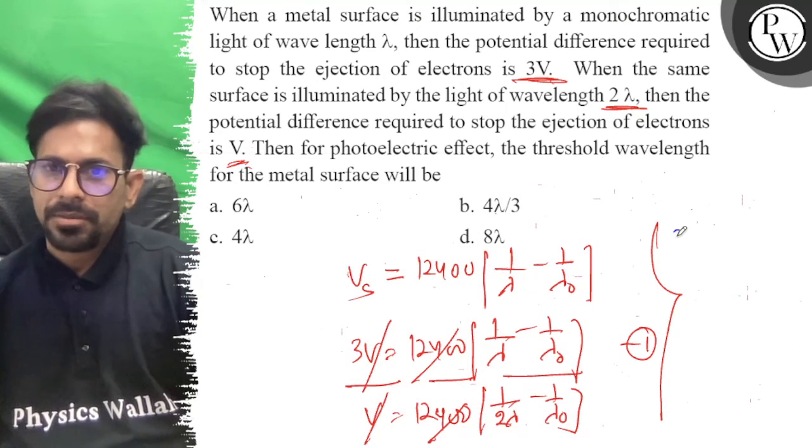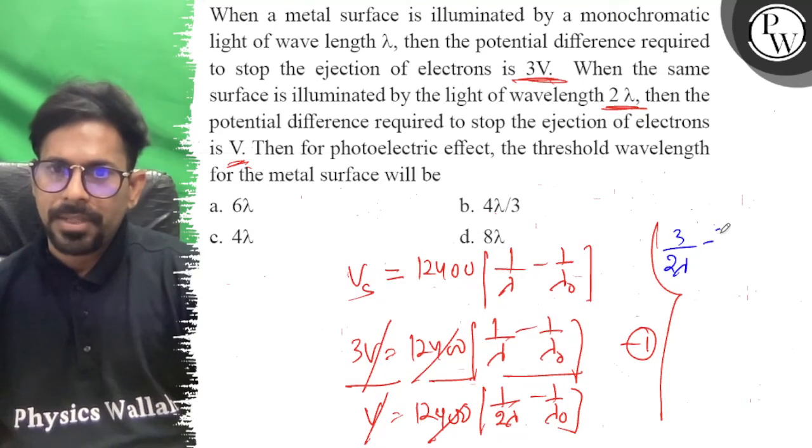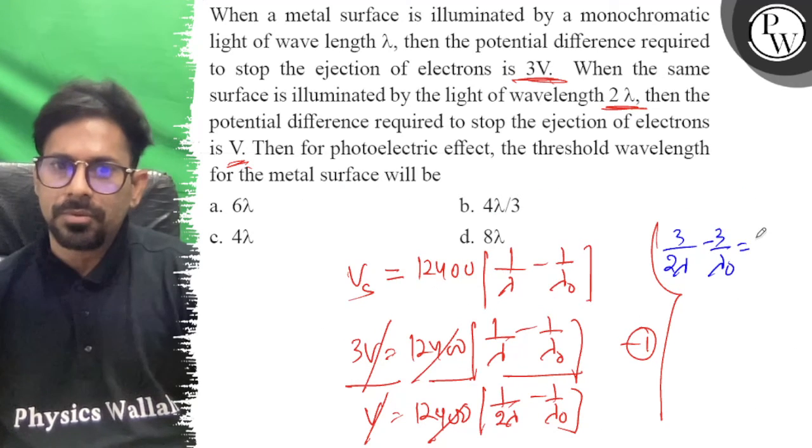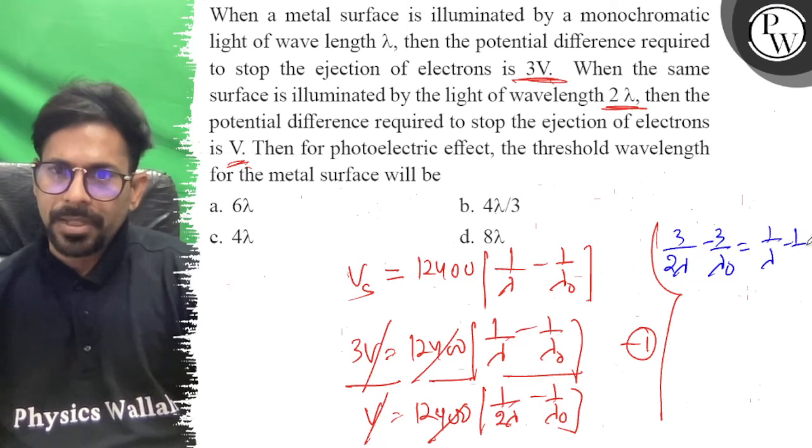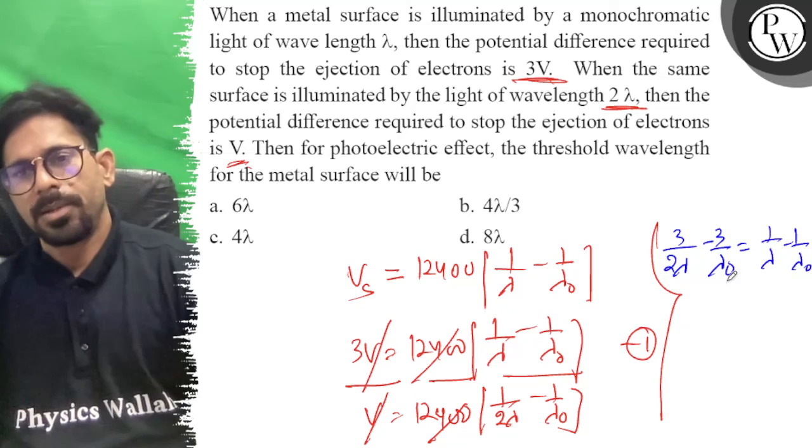Cross multiplication: 3 by 2 lambda minus 3 by lambda 0 is equal to 1 by lambda minus 1 by lambda 0. Now when we combine lambda and lambda 0 terms...